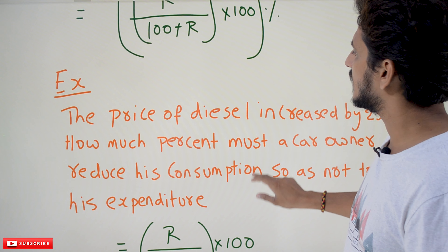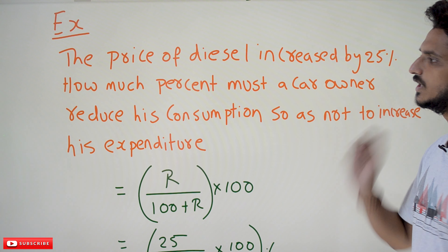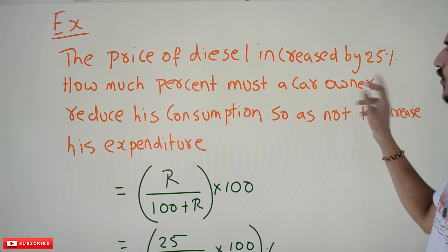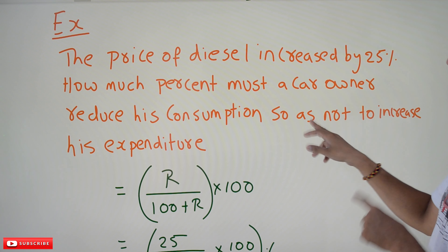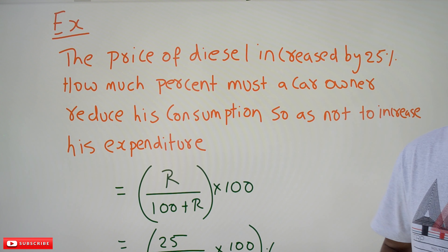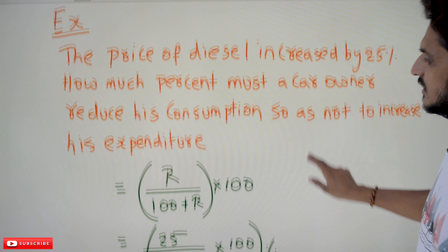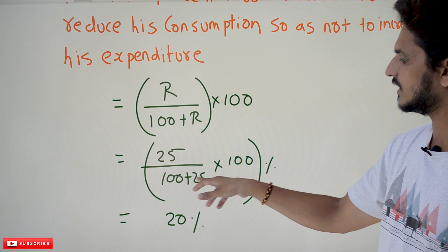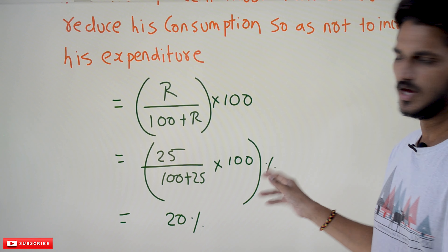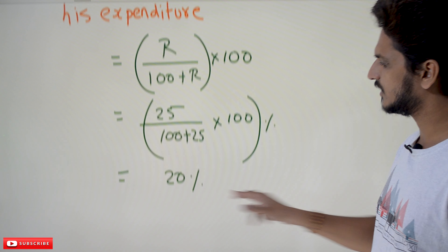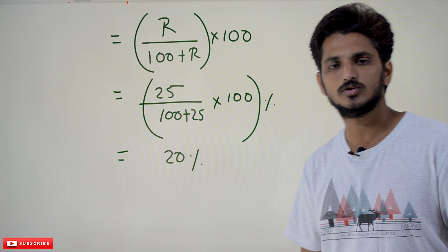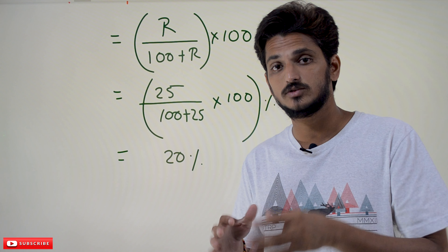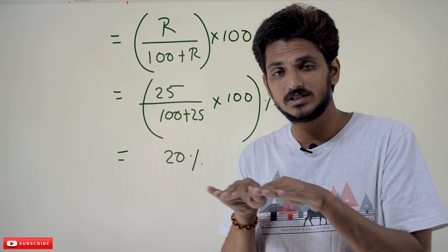We do one example. The price of diesel increased by 25 percent. How much percent must a car owner reduce his consumption so as not to increase his expenditure? We use the formula r divided by (100 plus r) multiplied by 100: that is 25 divided by (100 plus 25) multiplied by 100, which gives 20 percent. So he has to reduce his consumption by 20 percent to keep his expenditure balanced.